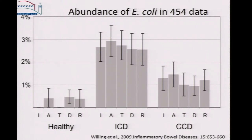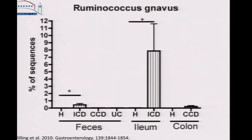Other organisms were more abundant in disease. E. coli across the five different biopsy locations was much more prevalent in Crohn's disease compared to healthy. And one Ruminococcus species was higher in the biopsies of those with ileal Crohn's disease compared to other locations and to healthy.